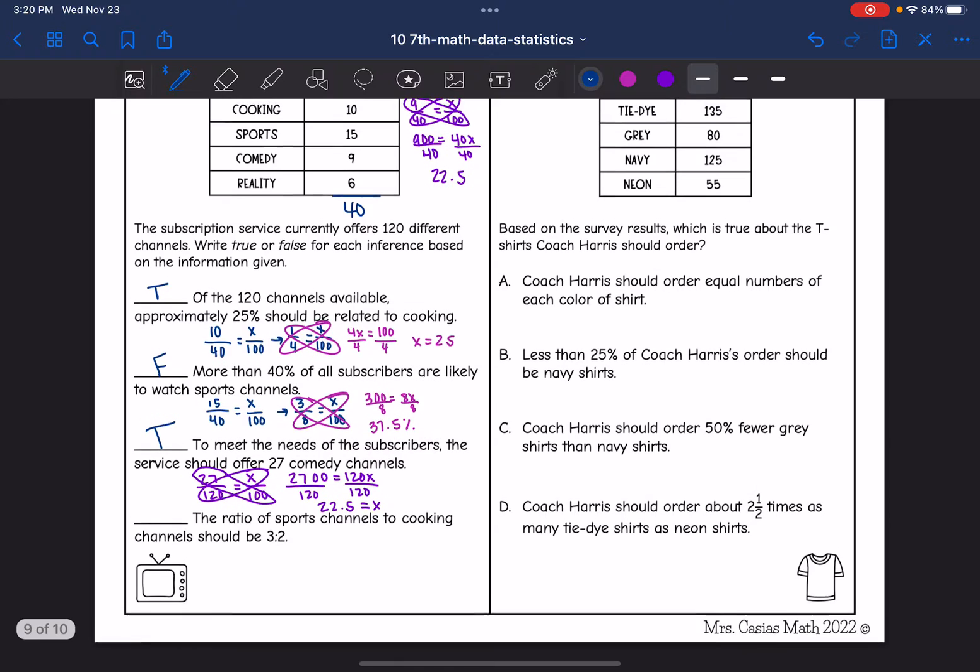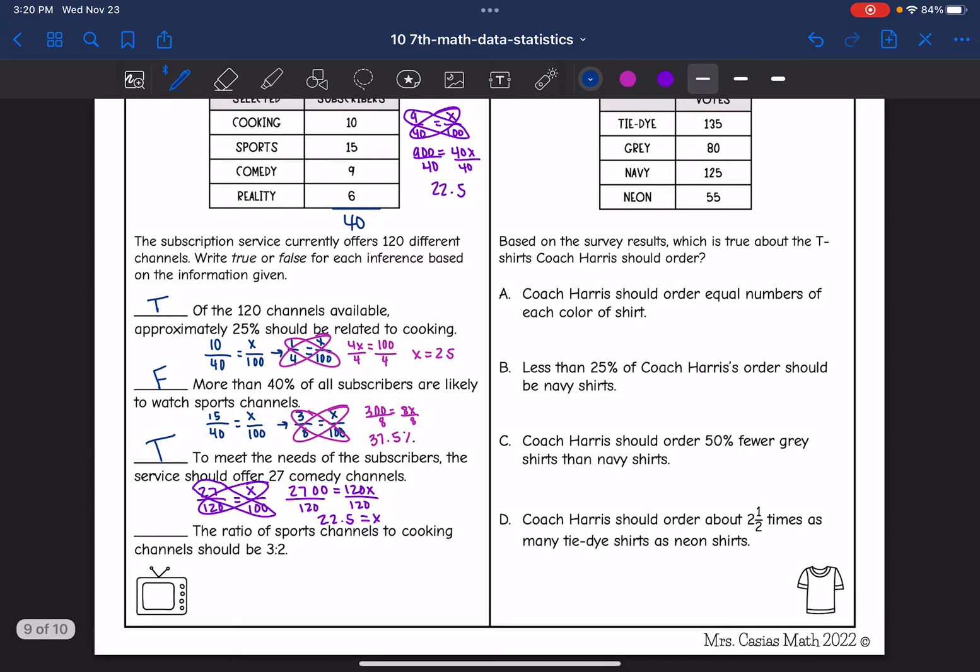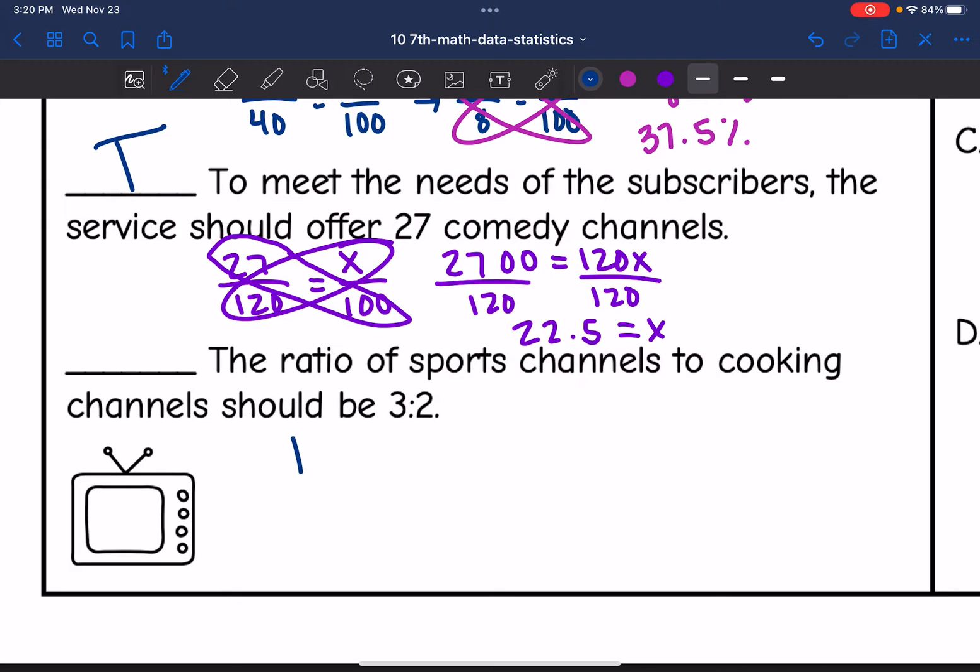Okay, then let's look at this last one. It says the ratio of sports channels to cooking channels should be 3 to 2. Let's look at what the ratio was in their survey of sports to cooking. It would have been 15 to 10. And both of those numbers are divisible by 5. So that ratio would simplify to 3 to 2, which matches what they put. So that one would be true as well.